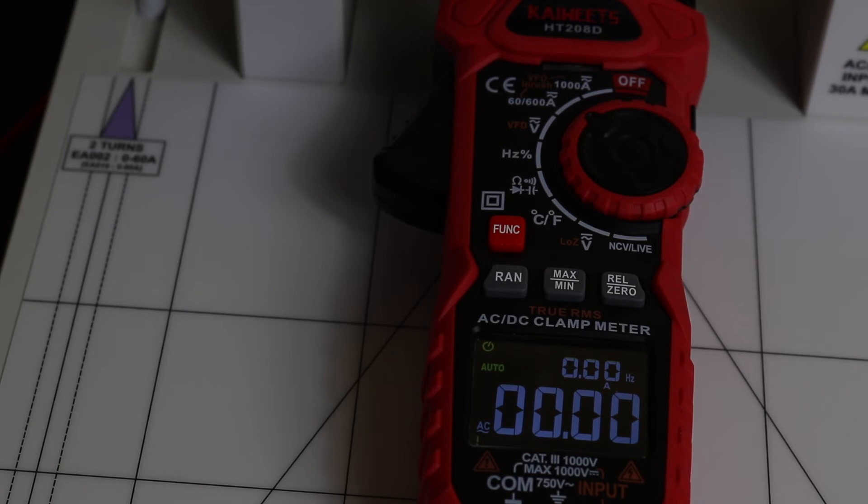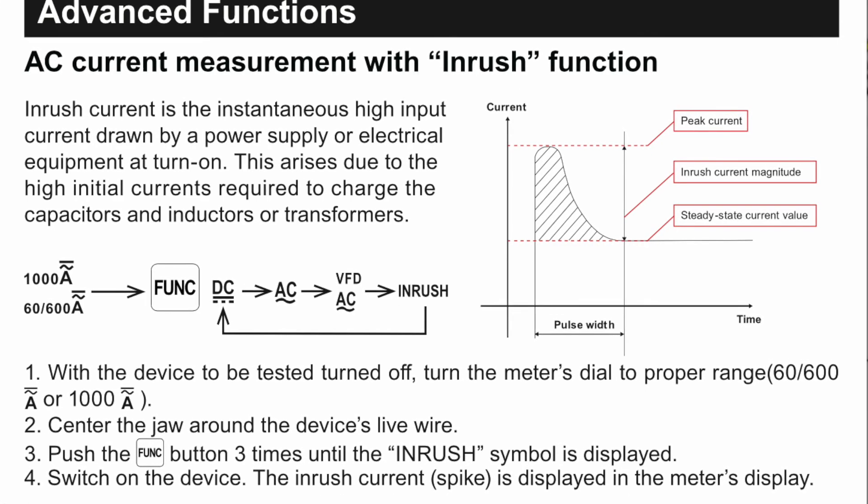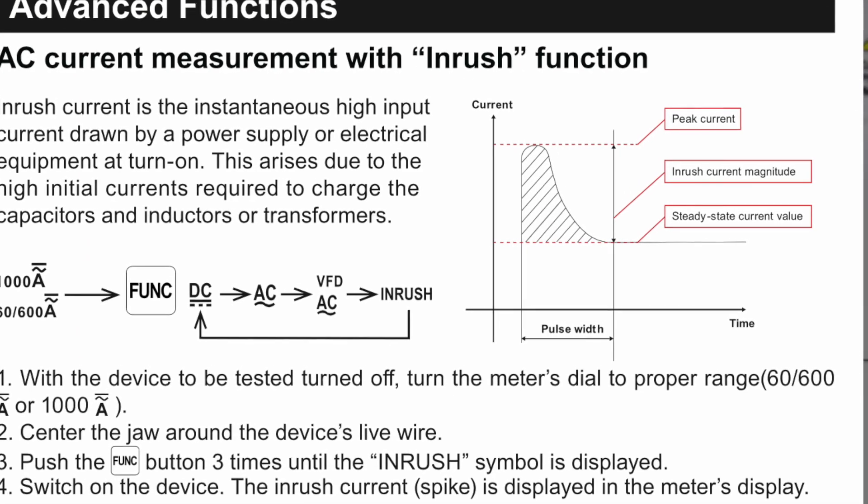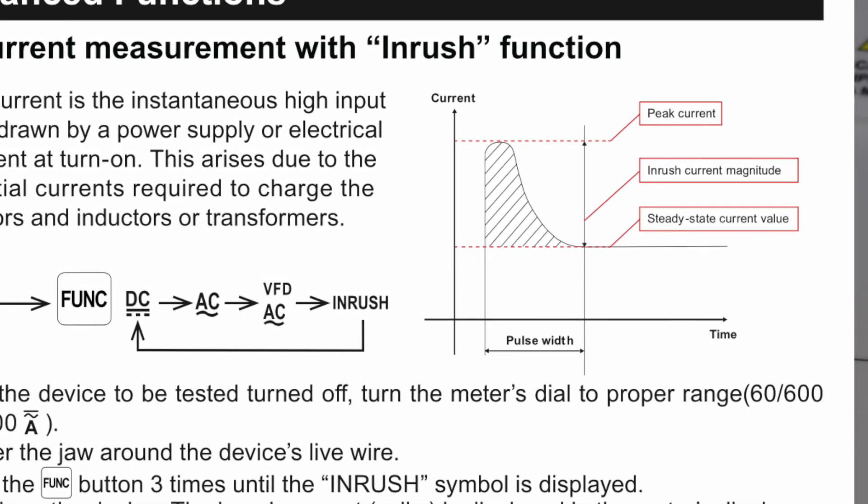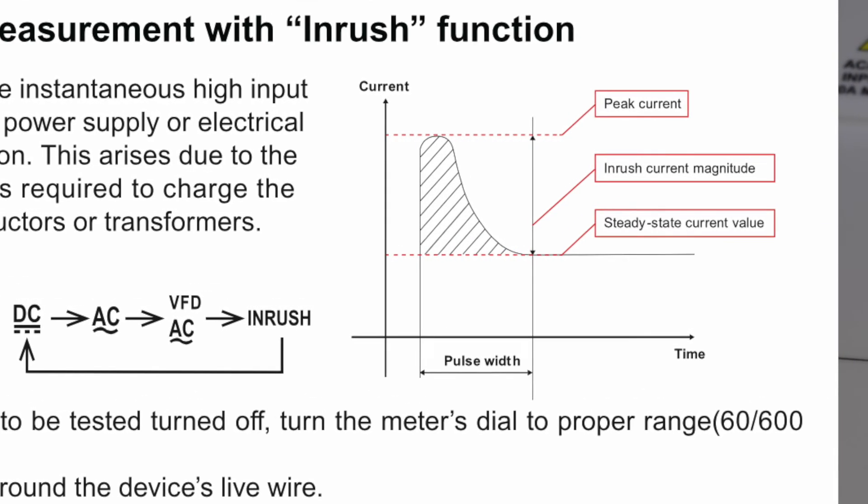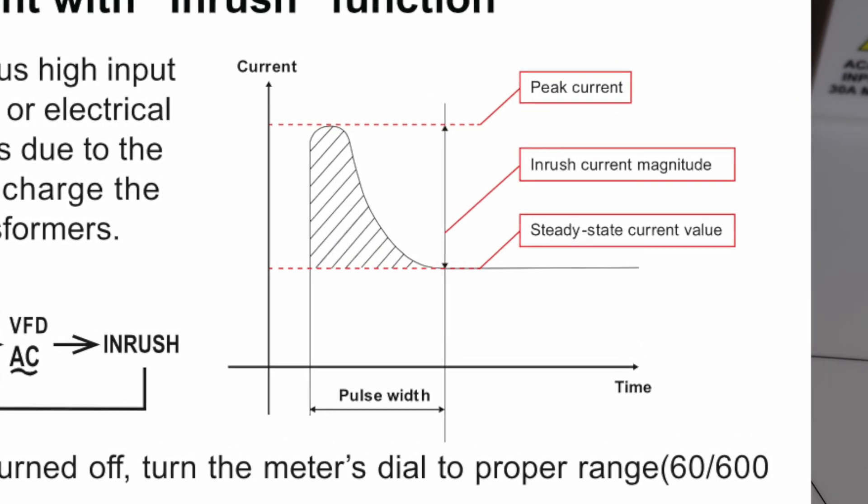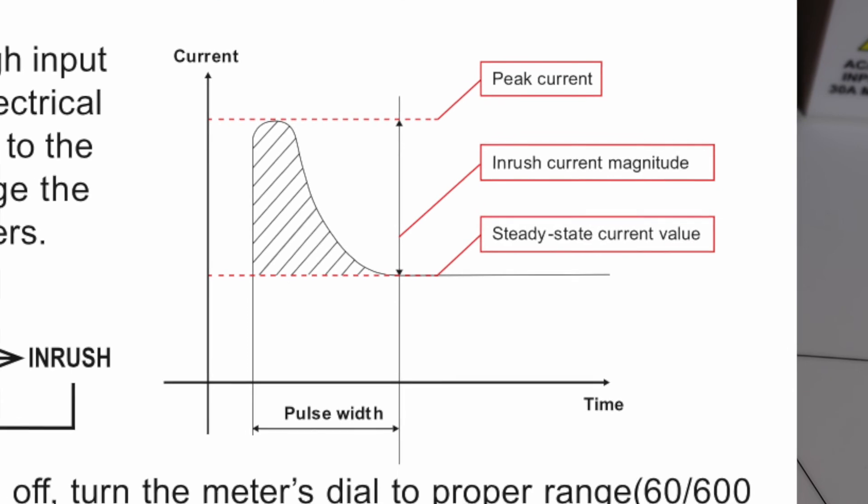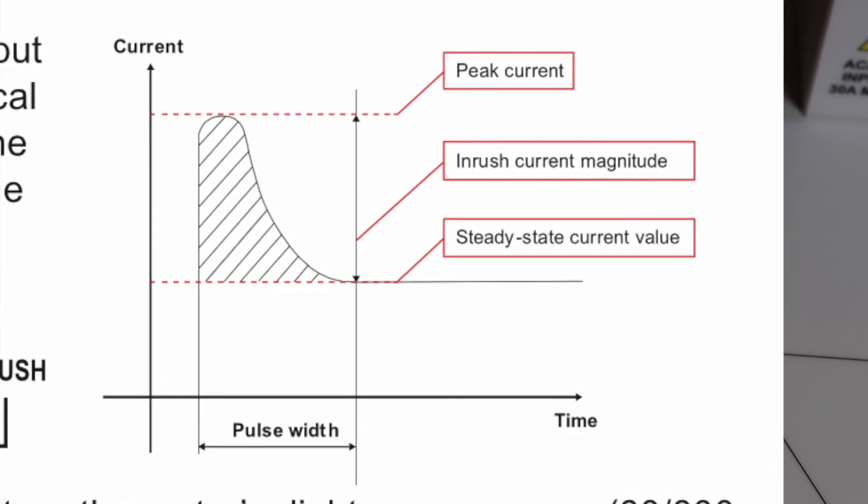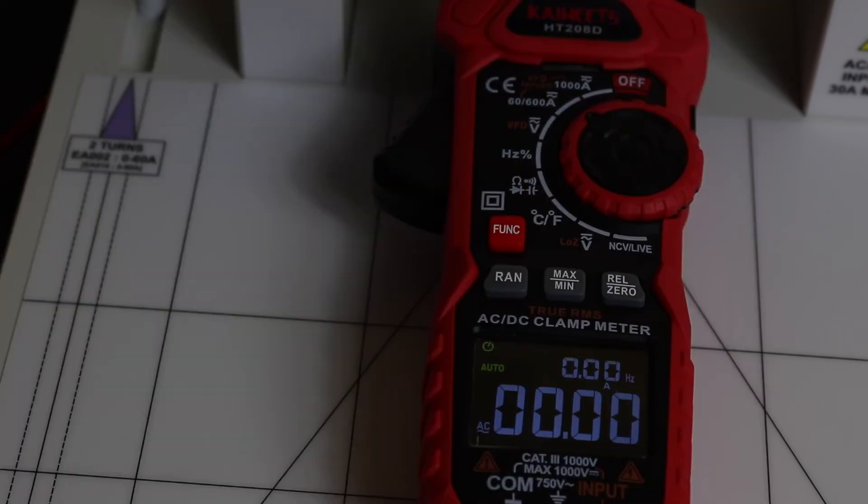Moving on to inrush current measurement, I'm just going to pull this page up from the manual and show you this, because I do have to commend Kaiweek for this. This is the first time I've seen a really good explanation of how their current clamp is actually measuring the inrush function. You can see they've done a little plot there and shown you that inrush magnitude is a differential between the steady state current and the peak current.